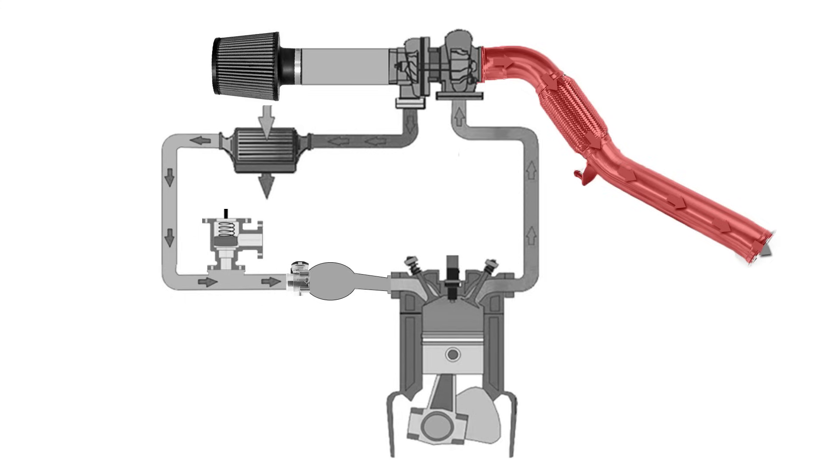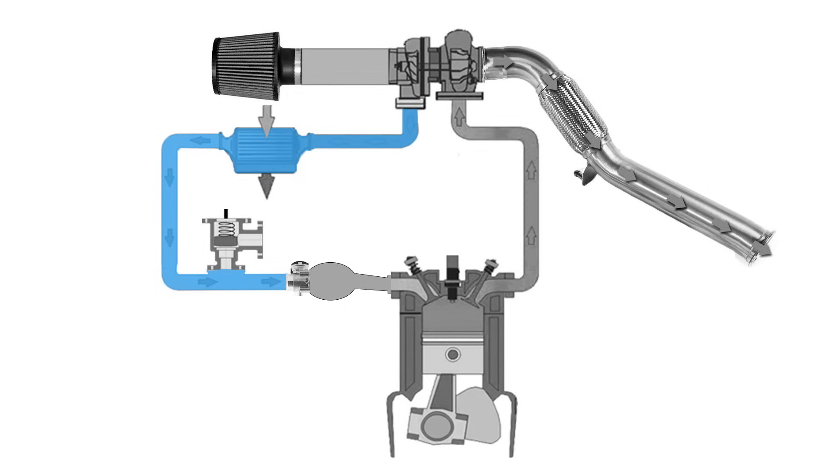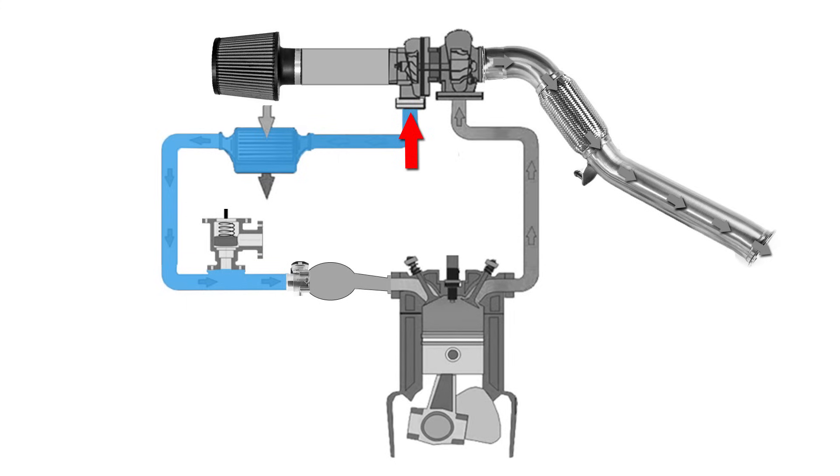The basic function of the blow-off valve in that system exists for one reason. When you are hard on the throttle and you hit boost, pressure starts to build up in those charge pipes. Once you snap that throttle shut, that charge has nowhere to go — the pressure is built up and air coming out of the turbo is forcing its way back towards the turbo. That causes what's called compressor stall. So what we have to do is relieve that pressure to allow the turbo to continue to spin and freewheel, so when we do need it it's available. That's where the blow-off valve and diverter valve come into play.